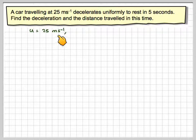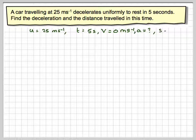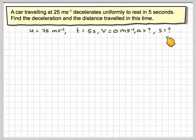We've got that U is 25 metres per second. We've got the time is 5 seconds. The final velocity, because it decelerates to rest, will be 0 metres per second. A, we don't know, and the displacement, we don't know either.